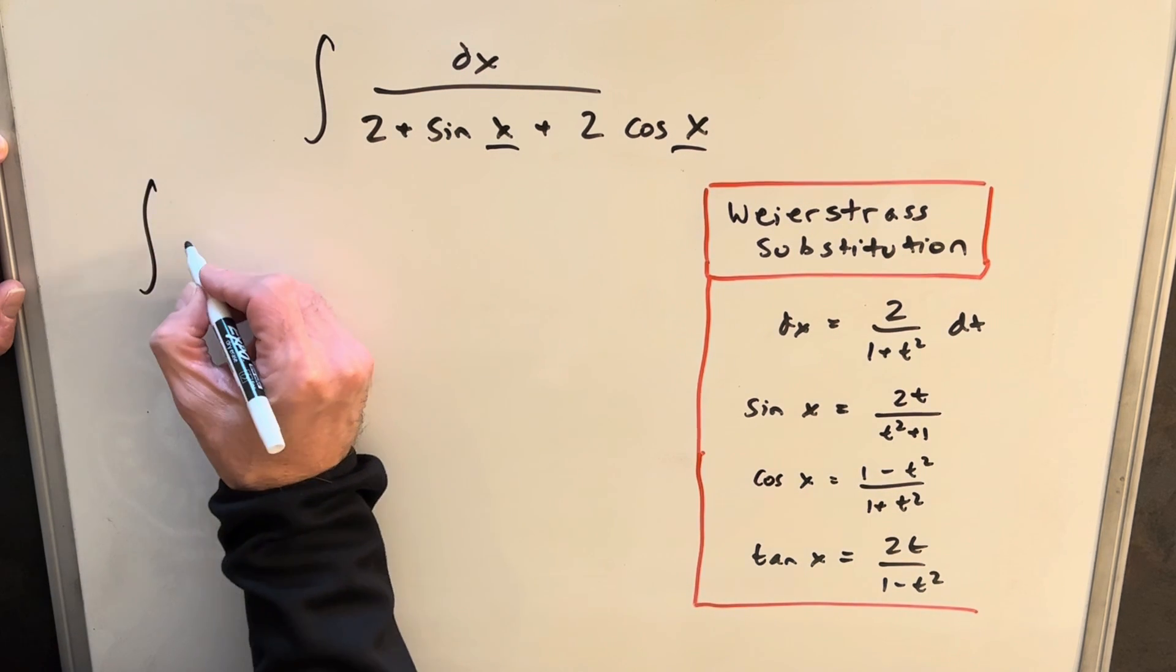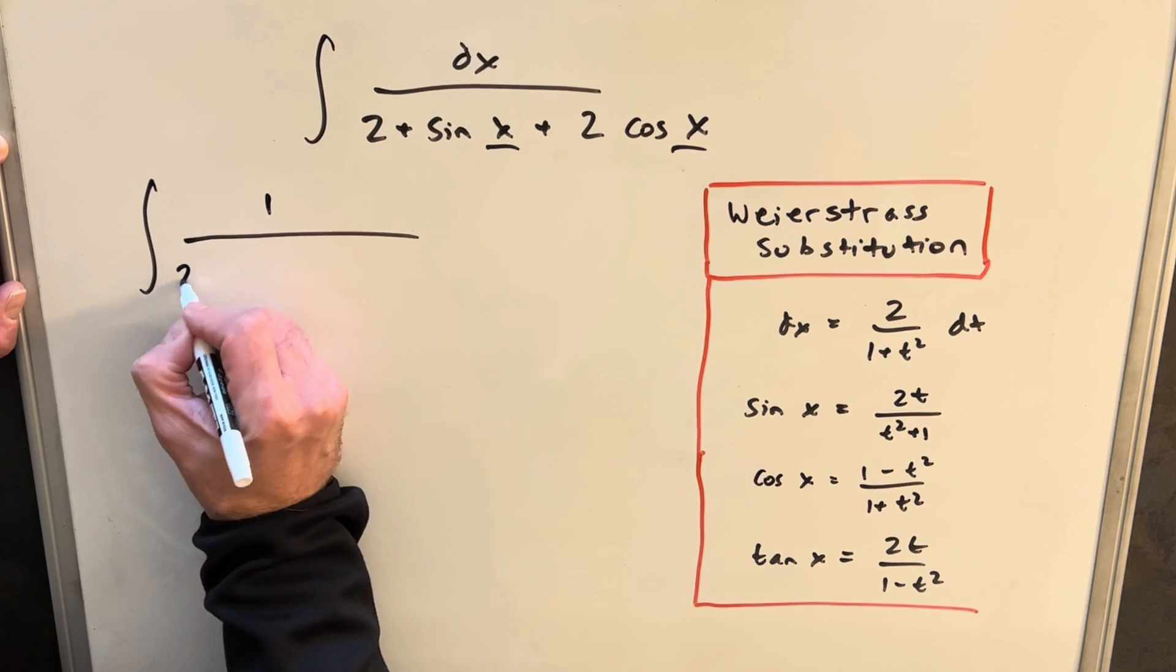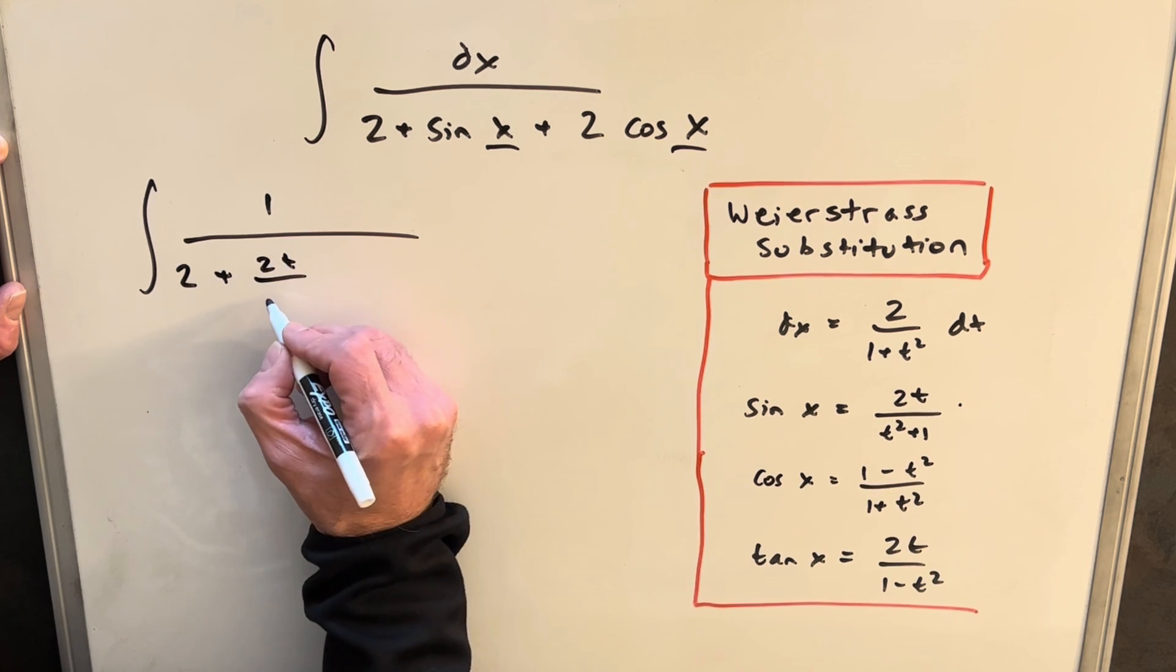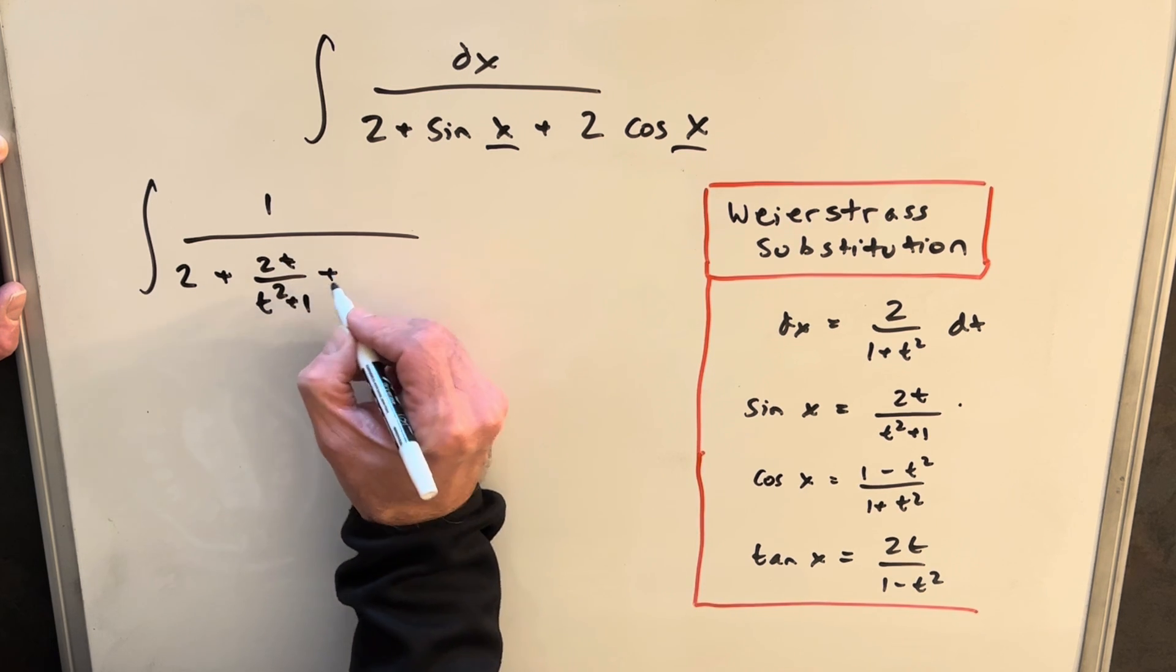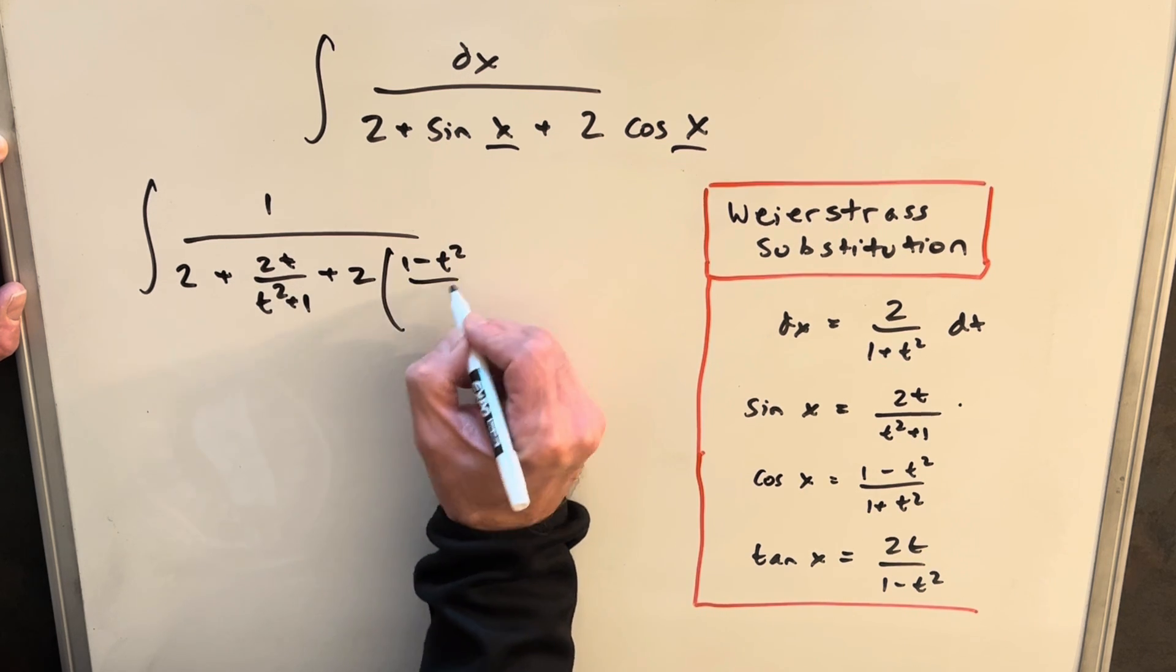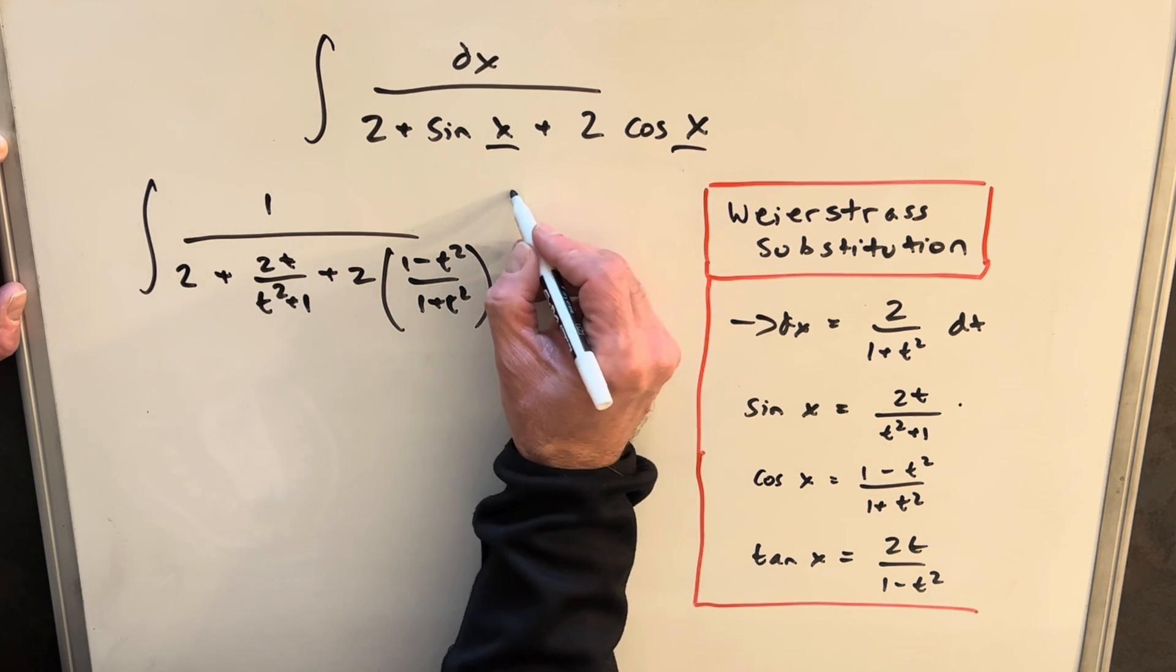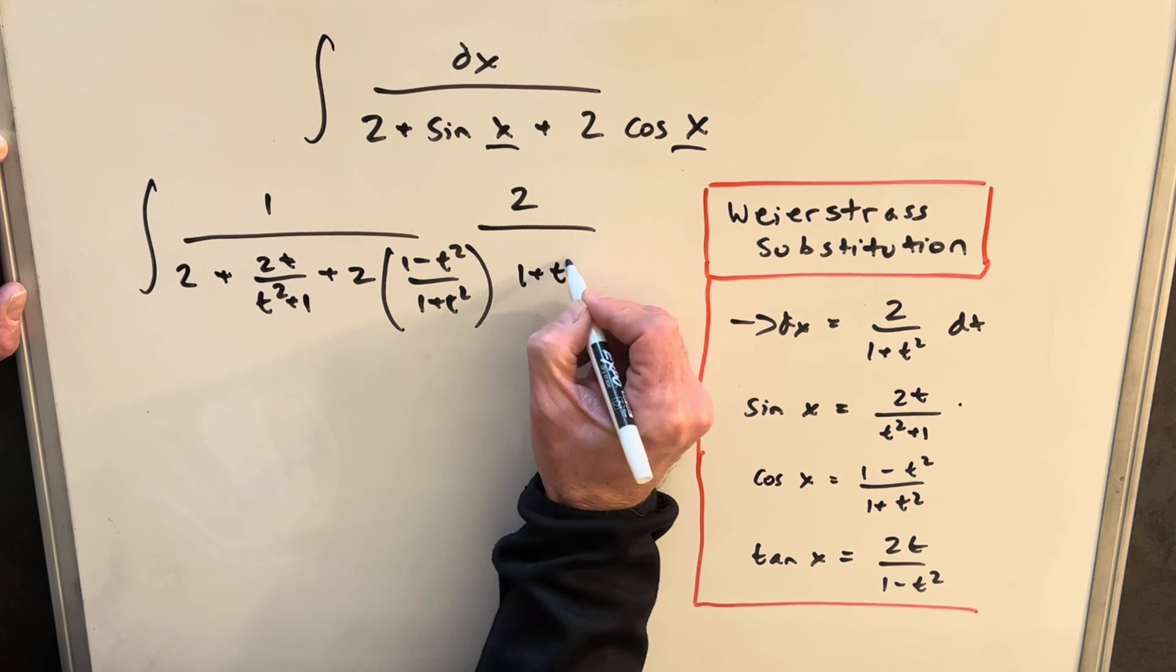So we're going to have just a 1 on top. Then we're going to have our 2 plus sine of x is going to be 2t over t squared plus 1, plus 2 times cosine x is going to be 1 minus t squared over 1 plus t squared. And then we just need our dx right here, which is 2 over 1 plus t squared.